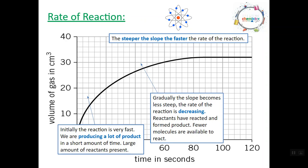As we go, the slope gradually becomes less steep because the rate of reaction is decreasing. The reactants have reacted and formed product, and few molecules are available to react. So at first you've got loads of molecules gradually running about and batting into each other and creating product. But as we go through the reaction, we're using up the reactants and there's less product being made. And that makes the rate of reaction slower.